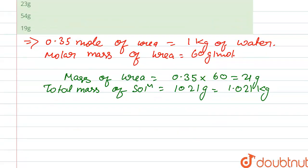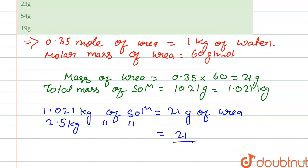So in 1.021 kg of solution contains 21 gram of urea. We have to find out in 2.5 kg of solution, the mass of urea is 21 upon 1.021 into 2.5.